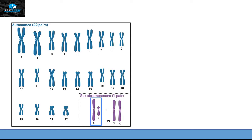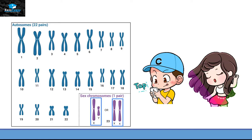So if that pair contains X and Y chromosomes, then that person will be a male. If the person has XX chromosomes, then that person is a female.